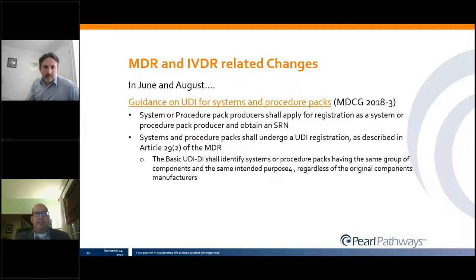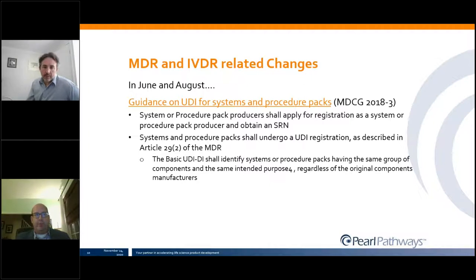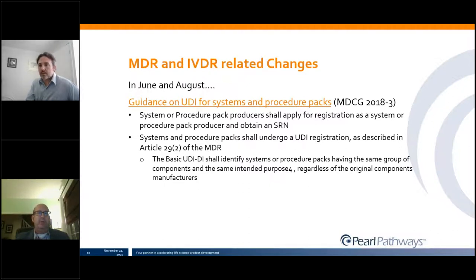In June and August, a couple of guidances came out. One relates to UDI for systems and procedural packs, providing clarification on how to apply for registration of a system or pack of products and obtain the SRN number. They must undergo UDI registration as described in Article 29, and the UDI would cover the same group of components and same intended purpose, regardless of the original component manufacturer's UDI.